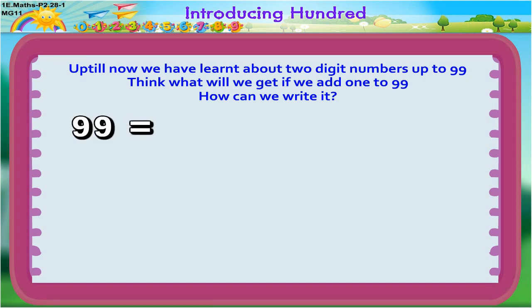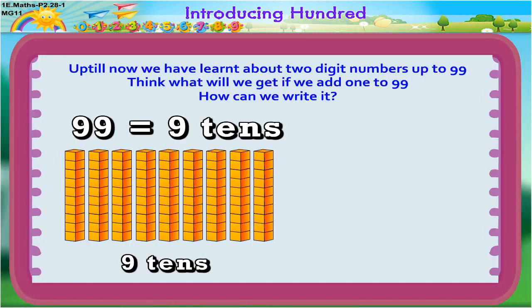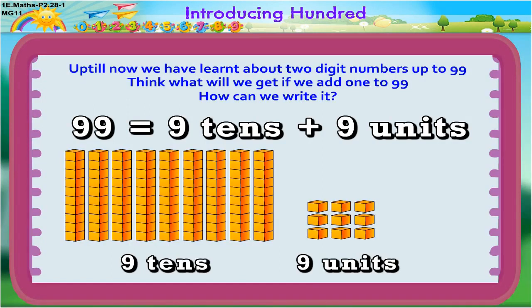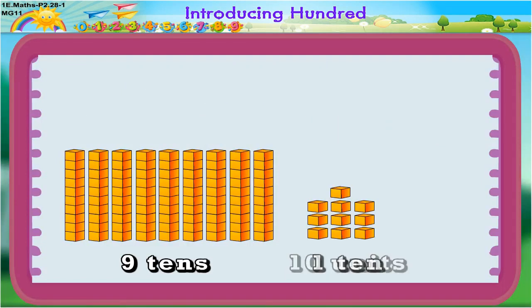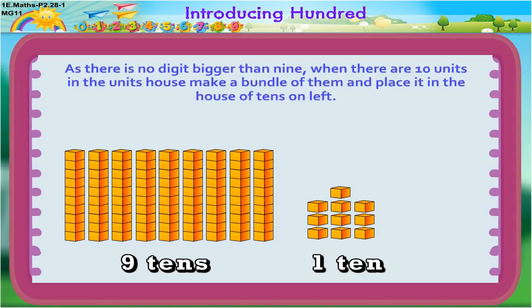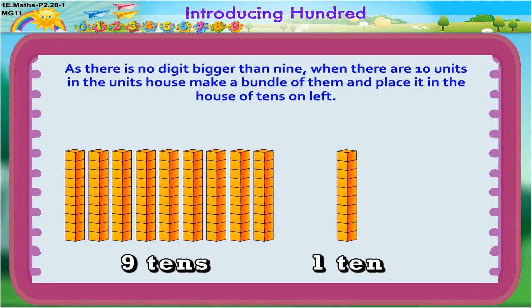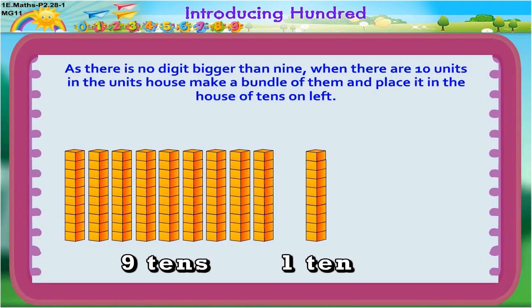99 means 9 tens and 9 units. Now, if we add 1 unit to it, we have 10 units altogether. And 10 units means 1 ten. As there is no digit bigger than 9, when there are 10 units in the units house, make a bundle of them and place it in the house of tens on the left.